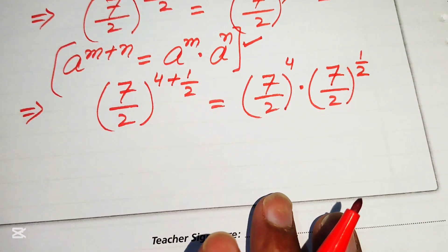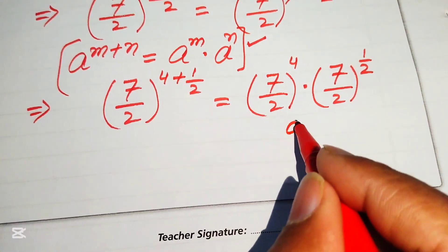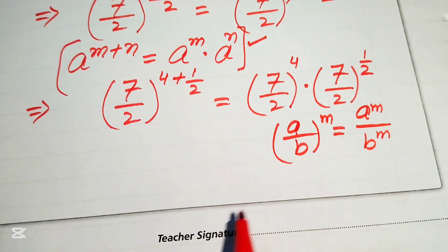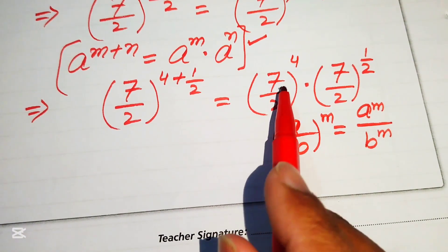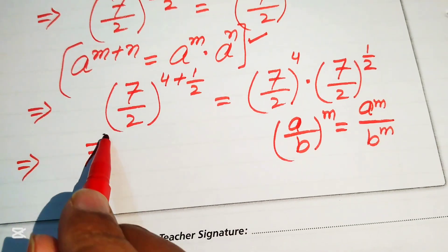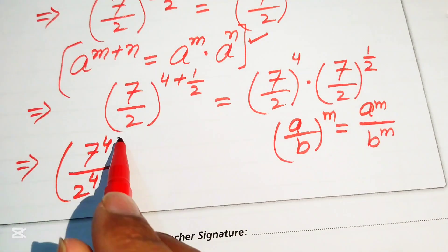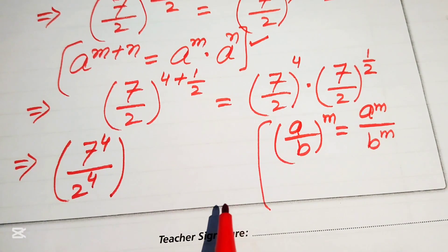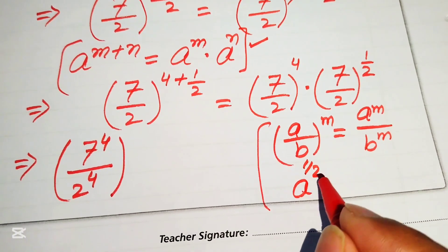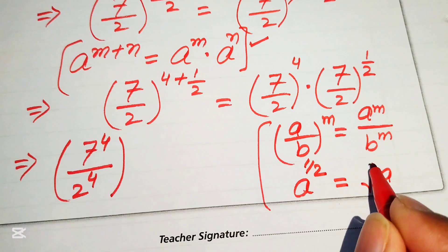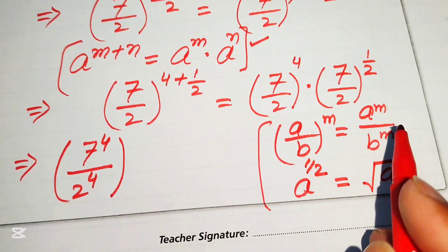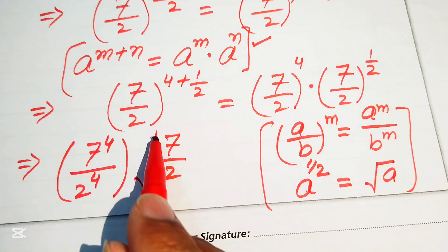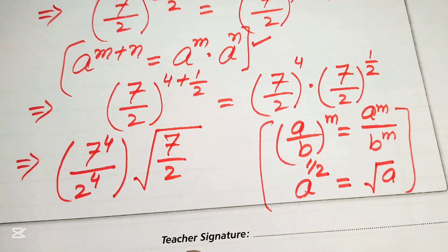We apply another exponent law: (a over b) to the power of m equals a to the power of m divided by b to the power of m. For the first term, we break the exponent and write 7 to the power of 4 divided by 2 to the power of 4. For the second term, we convert the exponential form: a to the power of 1 over 2 equals the square root of a, so 7 over 2 to the power of 1 over 2 becomes the square root of 7 over 2.